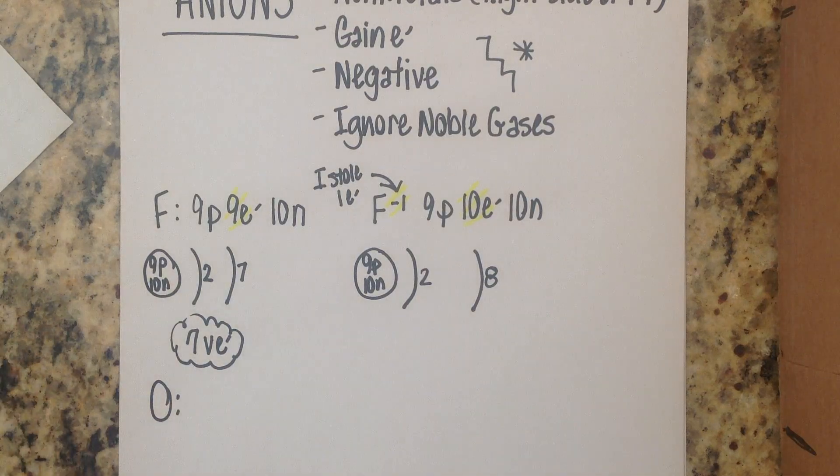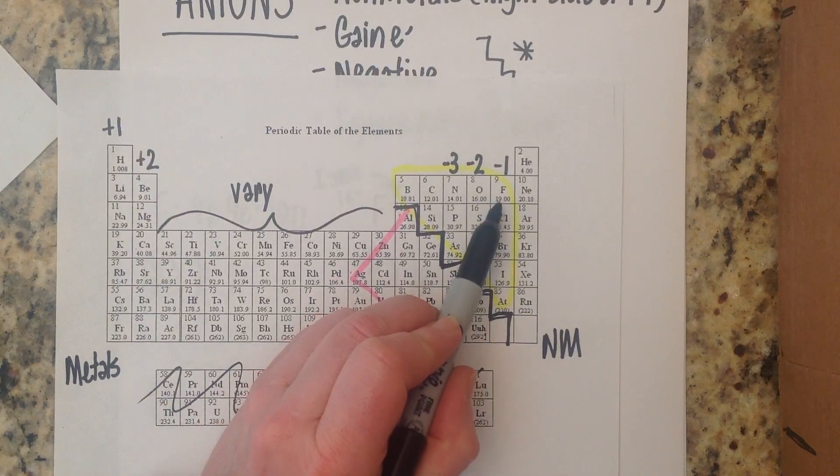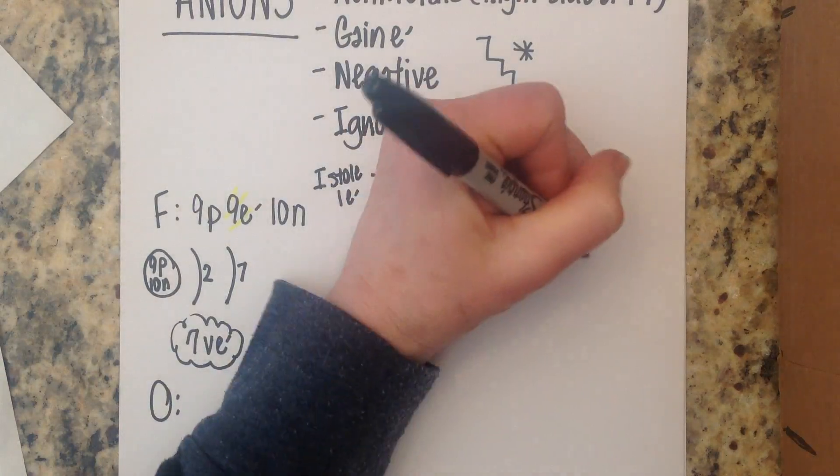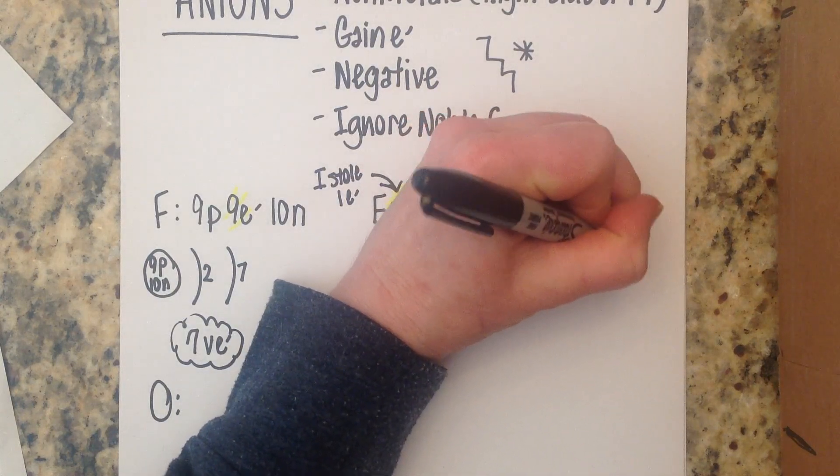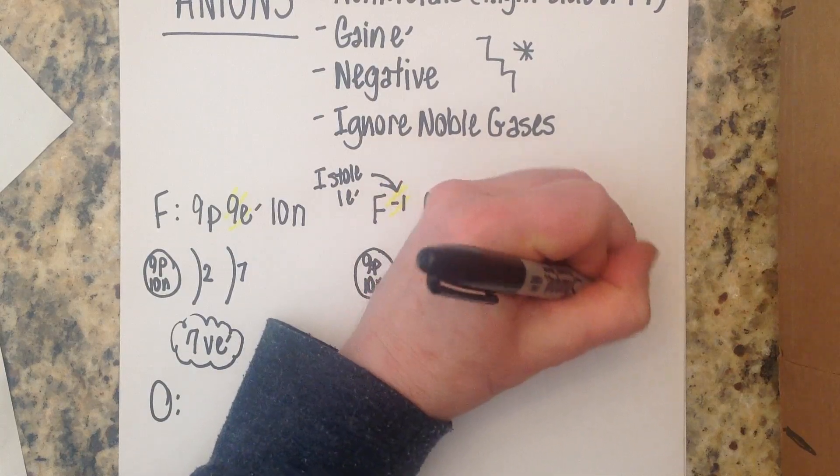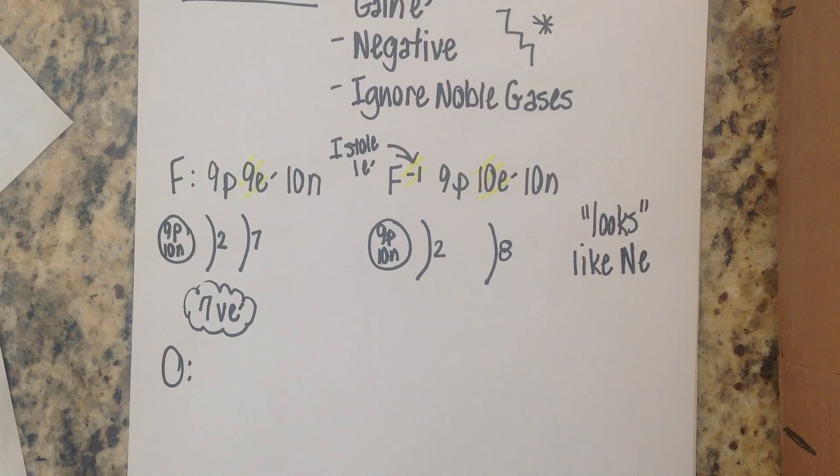Also when you look at the periodic table when fluorine gained that one extra electron and went from nine to ten electrons it now looks like neon and that was the whole point. Remember the noble gases are kind of like the superheroes of the periodic table everybody wants to look like a noble gas so it looks like neon but we know on the inside the identity has not changed so it's still fluorine.